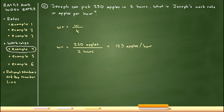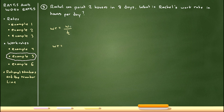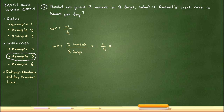Example five: Rachel can paint two houses in eight days. What is Rachel's work rate in houses per day? Applying wr = w/t: the work is two houses and the time is eight days. Two divided by eight reduces to one-fourth, or 0.25. The units are houses per day, so Rachel's work rate is 0.25 houses per day.